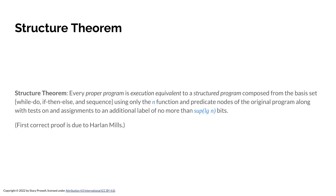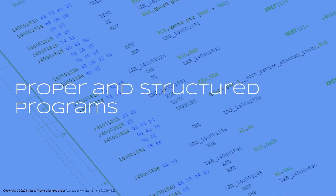The structure theorem has been the subject of many publications. The first correct proof is due to Harlan Mills, an IBM fellow. It's pretty powerful: it basically tells you how to take one program and convert it into another that uses a limited number of structures, which can be really good for analysis.